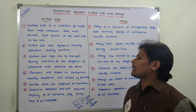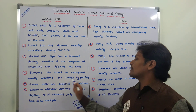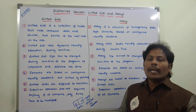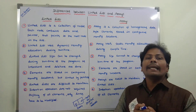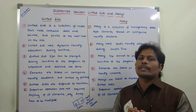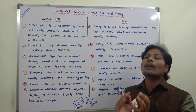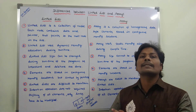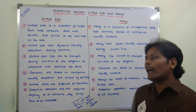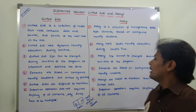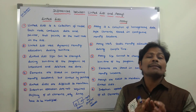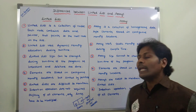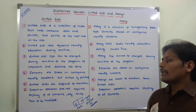Next point: in a linked list, nodes are stored in non-contiguous memory locations but linked by pointers. We have already discussed that a linked list is a collection of nodes linked by pointers. In the case of arrays, elements are stored in contiguous memory locations.